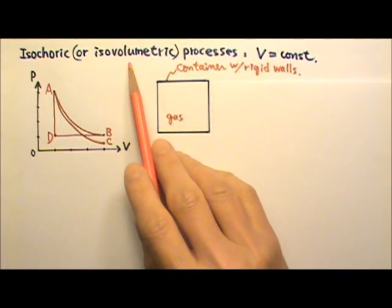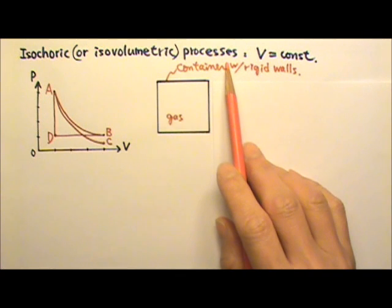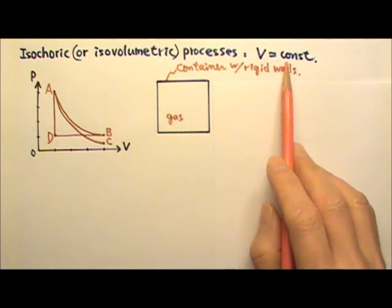An isochoric or isovolumetric process, by definition, means the volume stays a constant.